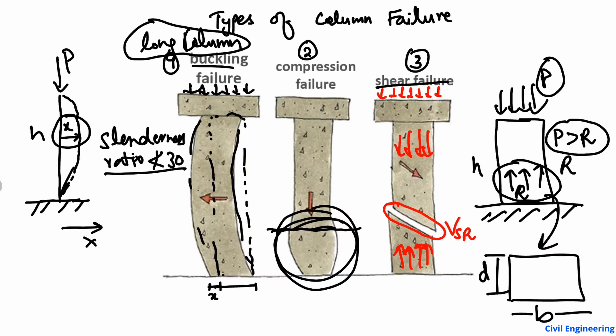Because of the increasing load, the column fails suddenly at that position with a sliding failure. The column divides into two components in a sliding position at some angle. This type of failure is called shear failure in columns.